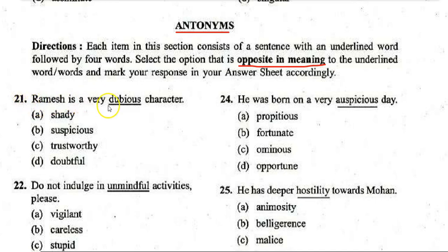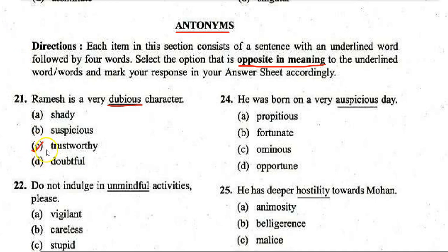First antonym question: 'Ramesh is a very dubious character.' Options: A. Shady, B. Suspicious, C. Trustworthy, D. Doubtful. The correct answer is C — 'trustworthy.' The antonym of 'dubious' is 'trustworthy.'